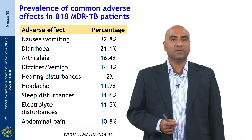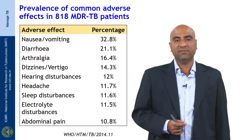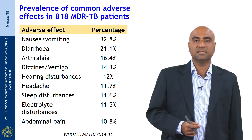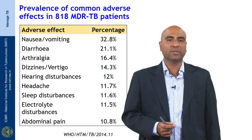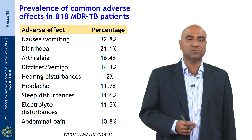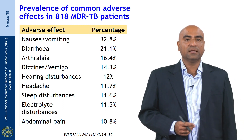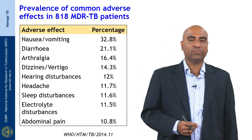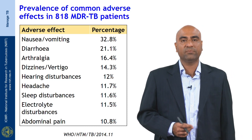How prevalent are the adverse effects with MDR-TB drugs? Based on various studies, WHO has found that the main side effect is GI intolerance — nausea and vomiting — occurring in roughly 32.8% of patients, that is about one third. Diarrhea occurs in about 21.1%, arthralgia in 16.4%, dizziness and vertigo in 14.3%, hearing disturbances in 12%, headache in 11.7%, sleep disturbances in 11.6%, electrolyte disturbances in 11.5%, and abdominal pain in 10.8% of patients.